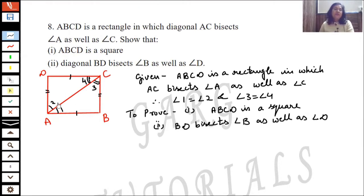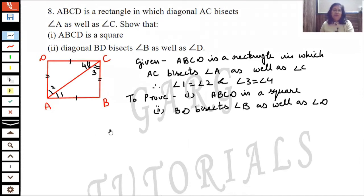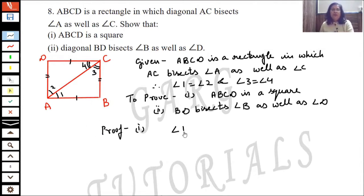We are given that AC bisects angle A, meaning angle 1 is equal to angle 2, and angle 3 is equal to angle 4. This is all given. In the first part, we have to prove that ABCD is a square, and in the second part, that diagonal BD bisects angle B as well as angle D.